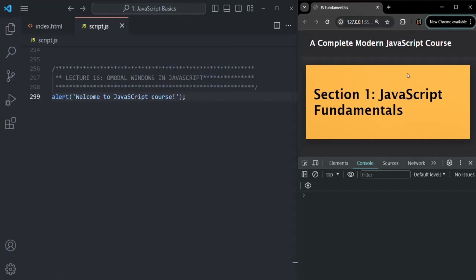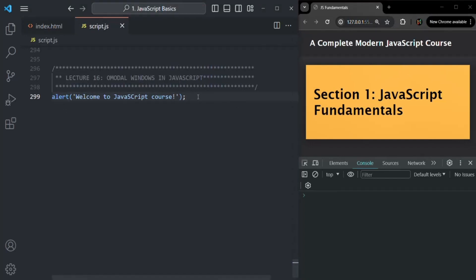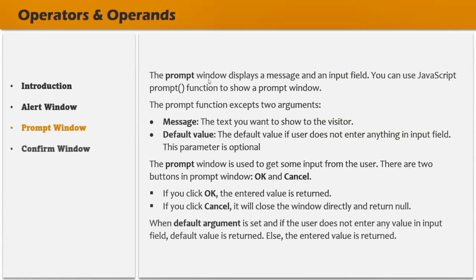To display an alert modal window in the browser, we use the alert function. Now let's talk about another modal window, which is prompt. The prompt window displays a message and an input field to the user, and you can use the JavaScript prompt function to show the prompt window. We use the prompt modal window when we want to get some input from the user.